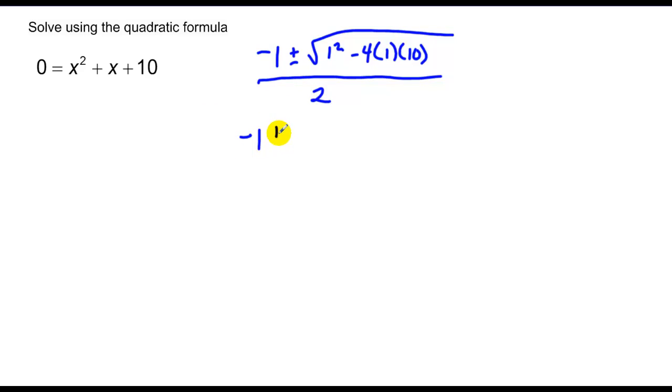So that's negative 1 plus or minus the square root of 1 minus 40 over 2. That's negative 1 plus or minus the square root of negative 39 over 2.